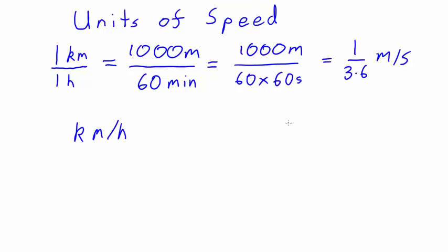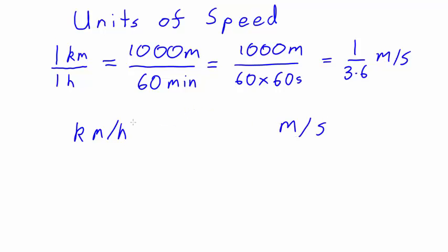So to convert from kilometres per hour to metres per second, we just divide by 3.6. Alternatively, if we have speed in metres per second, we just multiply by 3.6 to convert it to kilometres per hour. So let's do an example of each.